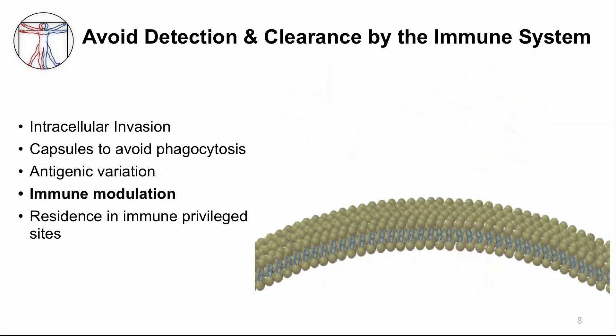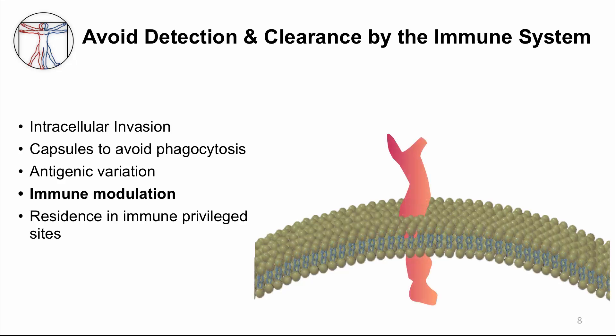Another way to avoid clearance by the immune system is for some viruses to modulate the immune system by producing mimics of immune proteins such as cytokines and cytokine receptors. Using a cartoon to illustrate: the red structure is a receptor for TNF-alpha on an immune cell, the green ball represents TNF-alpha, a type of cytokine, and binding of TNF-alpha to the receptor sets off a cascade of intracellular signaling.